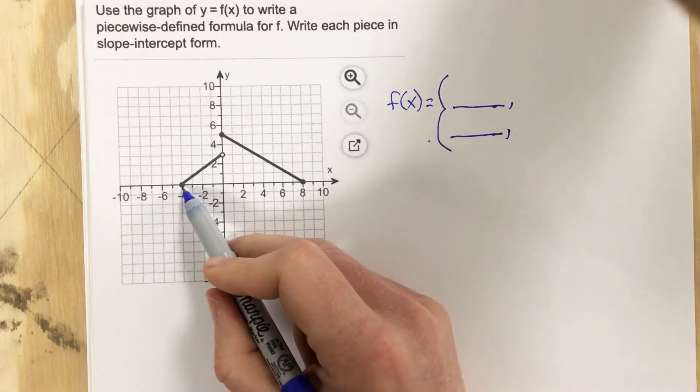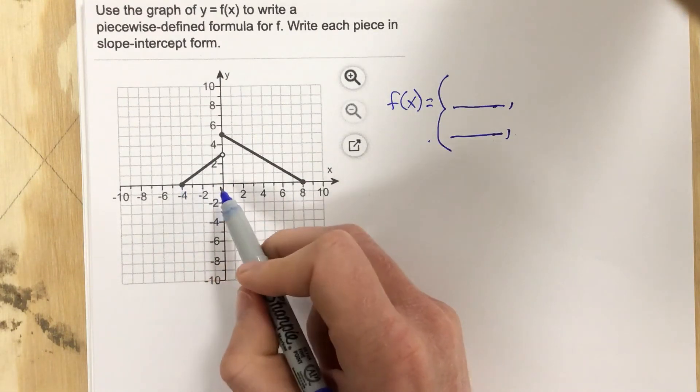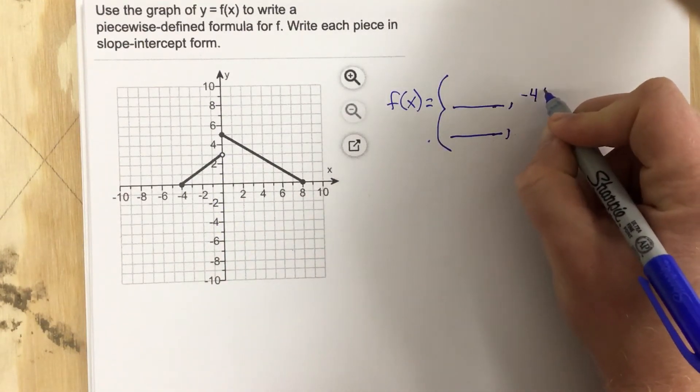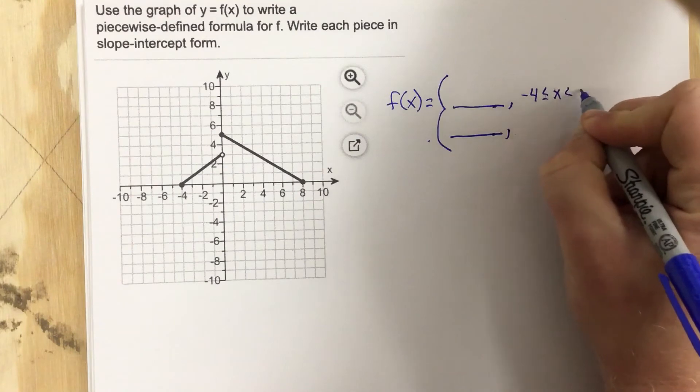So what's the domain here? The domain can be from negative four to zero, but it says not including zero. So I'm going to say negative four less than or equal to x, which is less than zero.